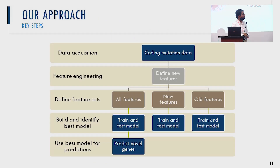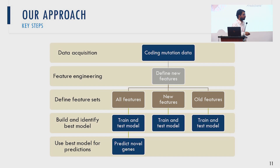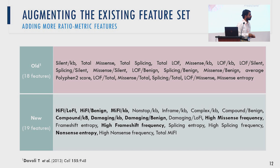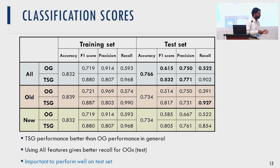To reliably predict driver genes, we pulled out coding mutation data from various sources, defined a set of features, and built a train-and-test model using both old and new features to predict novel tumor suppressor genes and oncogenes. Features include the ratio of high to low functional impact mutations, nonsense entropy, and the fraction of damaging to benign mutations. These engineered features give better predictive power for identifying tumor suppressors and oncogenes.